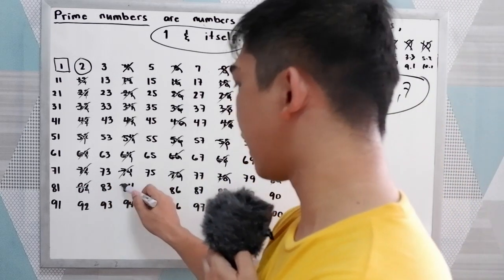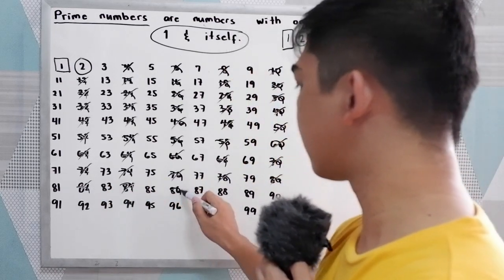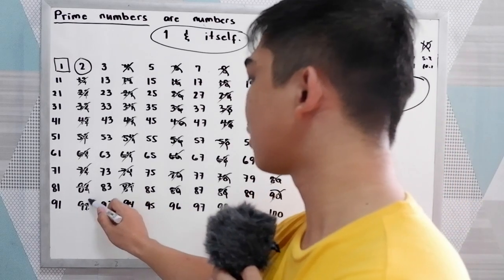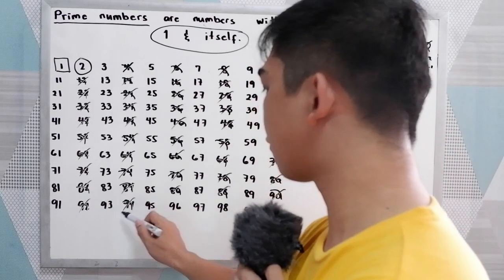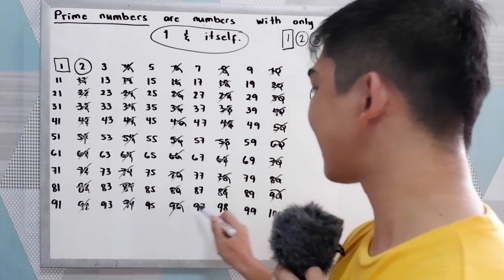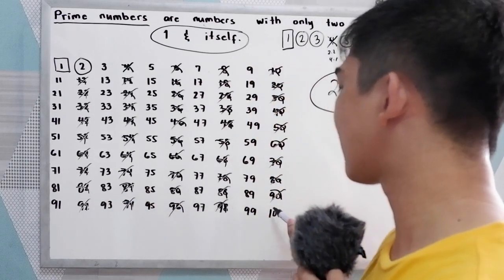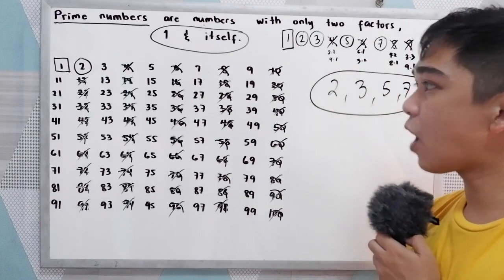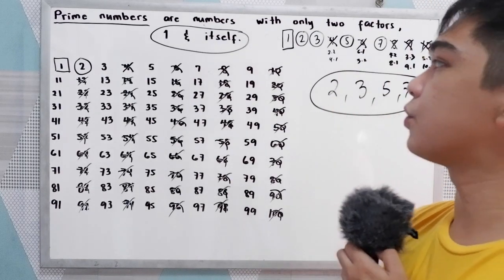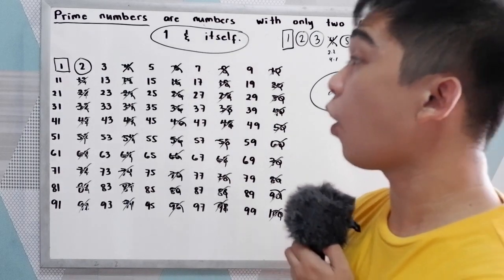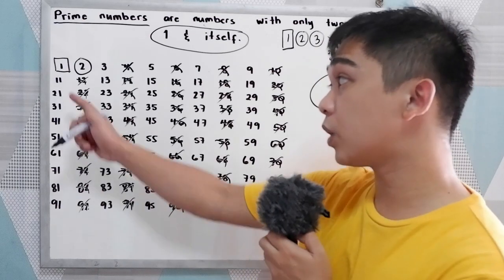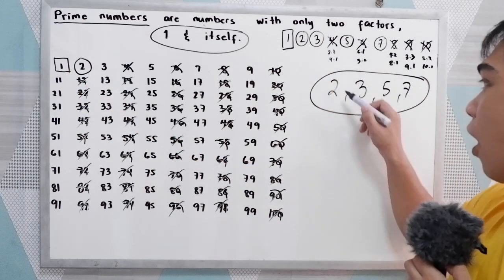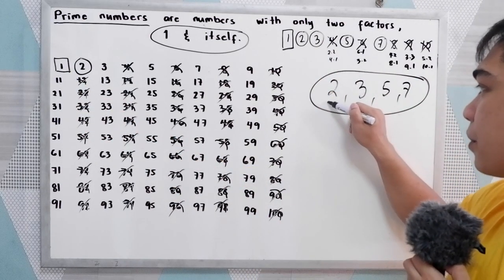Continuing the multiples of two: 84, 86, 78, 90, 92, 94, 96, 98, and 100. Again, our goal is to find all the prime numbers between 1 to 100. We're done at number 2.